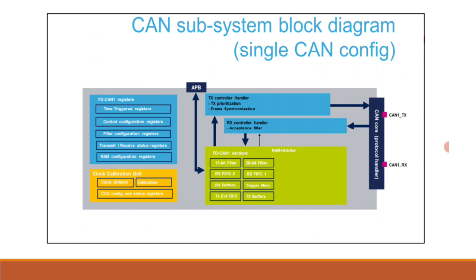The TX handler manages prioritization and frame synchronization before sending messages to the CAN core protocol handler. The RX handler receives messages from the CAN core and accepts or rejects them based on the filters loaded from RAM. A clock calibration unit can be used to generate a calibrated clock from the HSI internal RC oscillator and the PLL by evaluating CAN messages received by FD CAN 1. Filters and triggers are directly sent by the CPU through the APB bus.